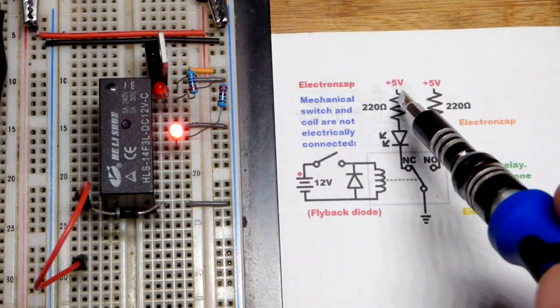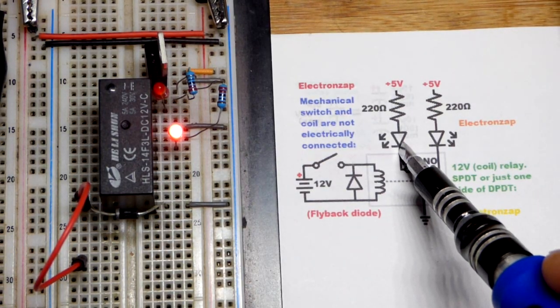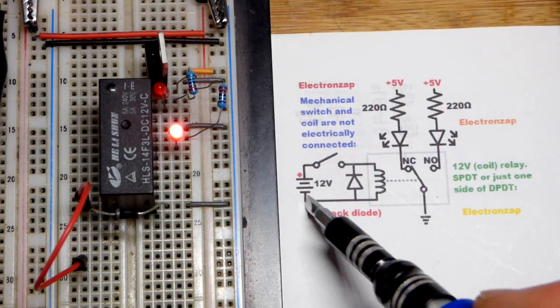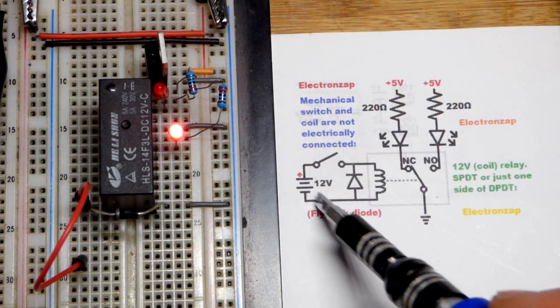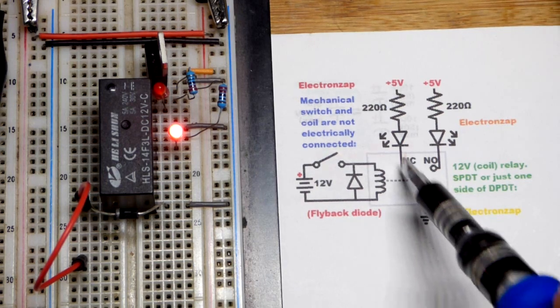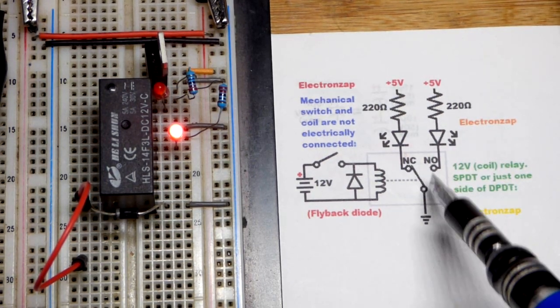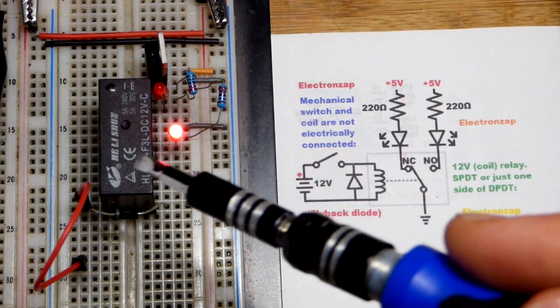A voltage regulator right here is keeping five volts across the LEDs and the resistors right there. It's very important to understand you can use one power source just for switching the relay and then a completely separate power source powering the loads that it switches back and forth.